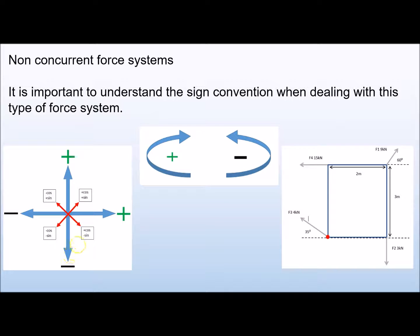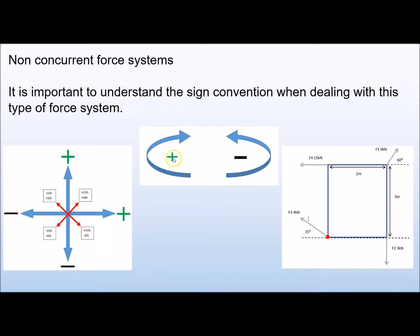In our force system we have forces that are somewhere in between — one that's up and to the right, and one that's up and to the left — so we're going to have to work out their horizontal and vertical components. When it comes to the moment, determining whether the force is positive or negative depends on whether it pulls the object clockwise or anti-clockwise.